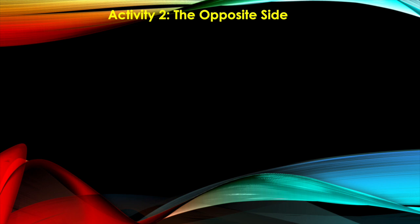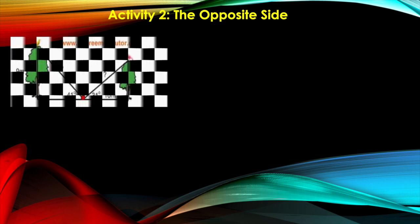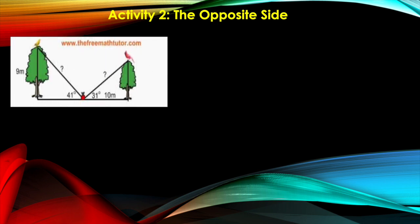So let us look at this diagram here. In the diagram, two trees are shown and an apple on the ground. The height of the taller tree is given at 9 meters, and the reference angles are also given.